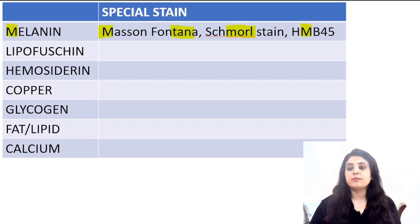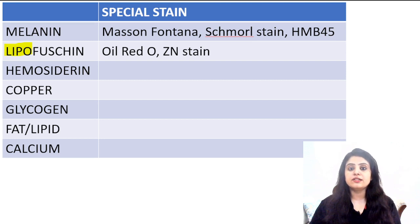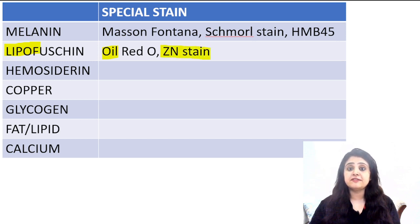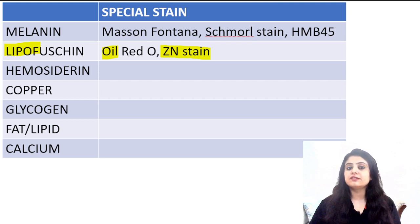Repeating: M for melanin, M for Masson-Fontana, Schmoll stain, and HMB-45 — HMB-45 again has an M. Coming to the next one: lipofuscin. Lipo will always remind me of lipid or fat — oil is always lipid or fat. So lipofuscin: 'lipo' reminds me of fat, which gives us Oil Red O; and 'fuscin' sounds like 'fast', which is the ZN stain telling me about acid fastness.